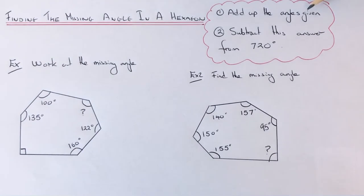Add up the angles in the hexagon, and the second step is subtract the answer away from 720 degrees. This is because the sum of interior angles in a hexagon is 720. So let's go over the two examples.